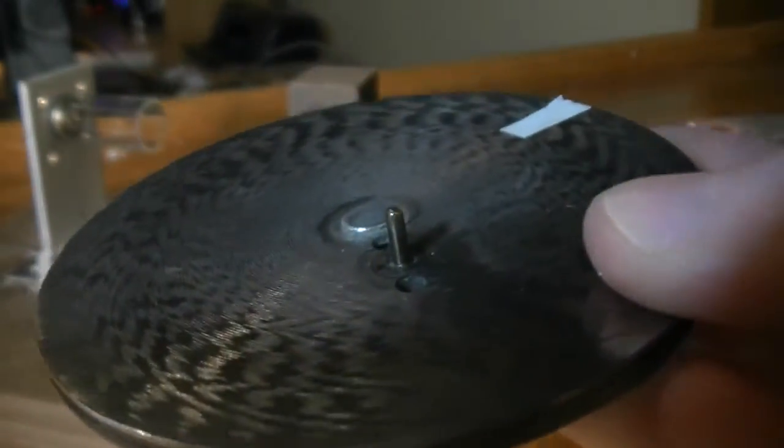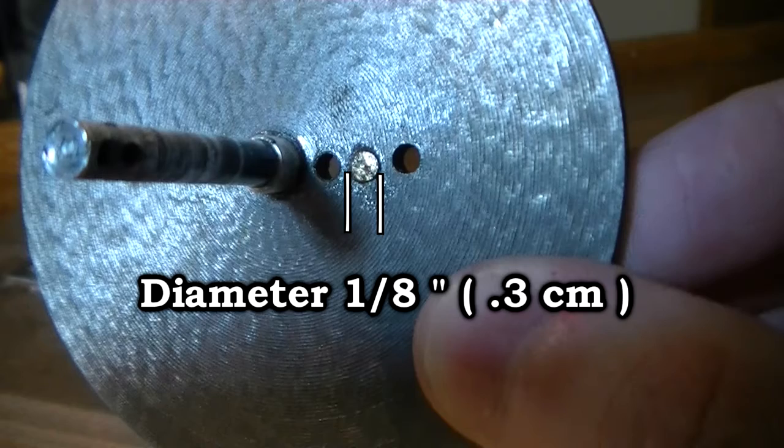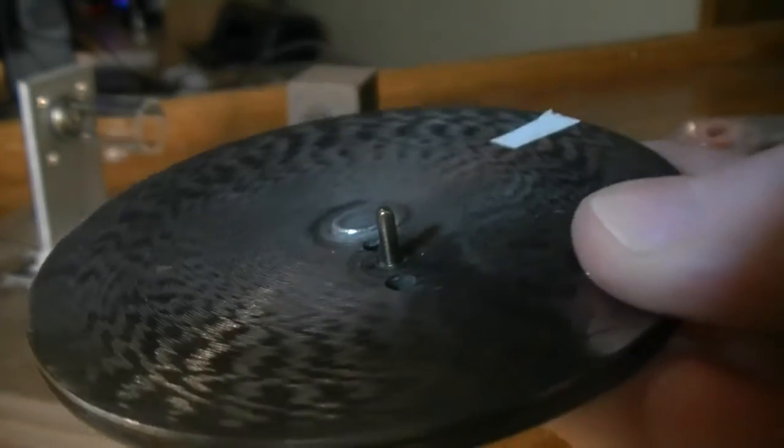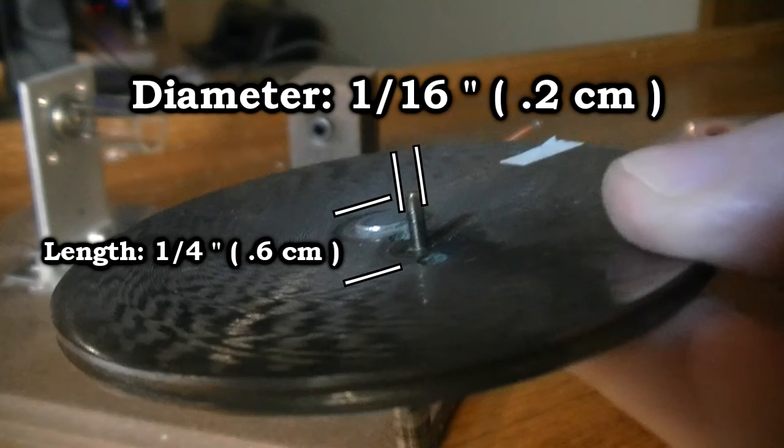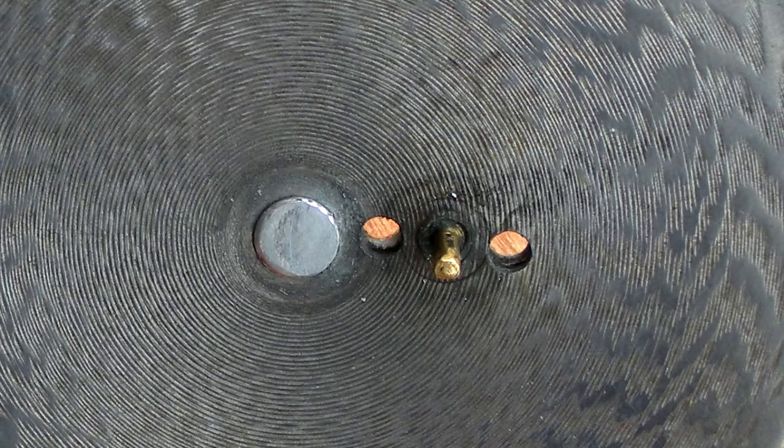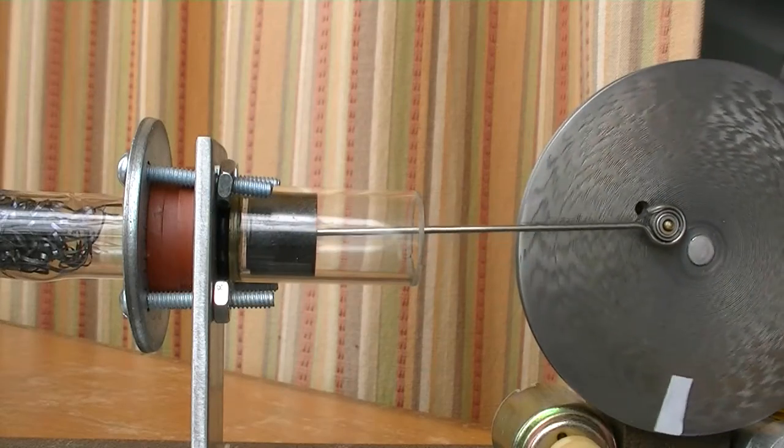The brass pin sticking out of the flywheel has two diameters as well. It fits into a one eighth inch hole, but the part sticking out of the flywheel is one sixteenth of an inch in diameter. It sticks out about one quarter inch. The distance from the center of the brass pin to the center of the flywheel shaft is seven sixteenths of an inch. That means the graphite piston travels seven eighths of an inch.